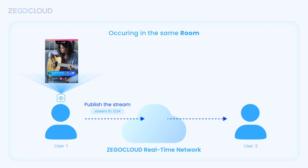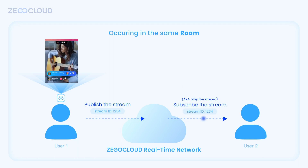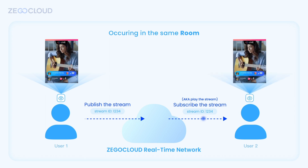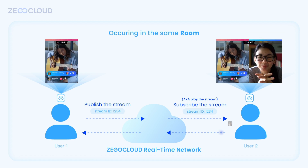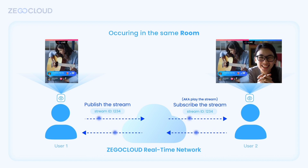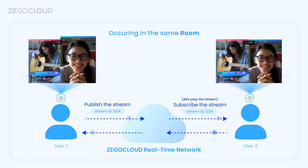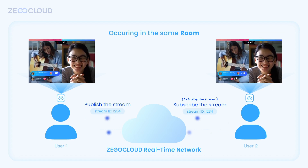User 2, at a long distance, can subscribe to the stream by specifying the stream ID and then receive User 1's video and audio. Similarly, User 1 and User 2 must pull streams from each other to achieve a one-on-one interaction.